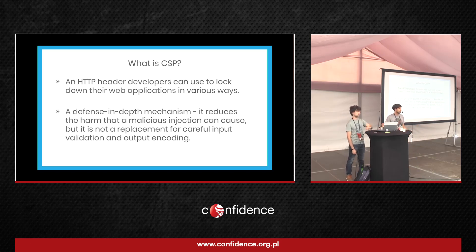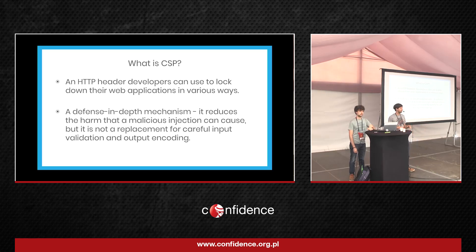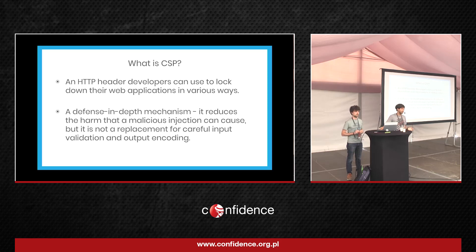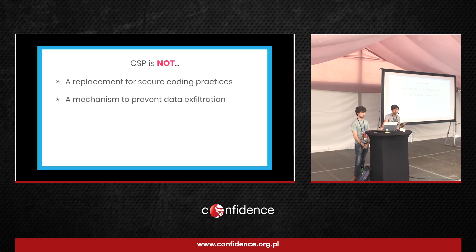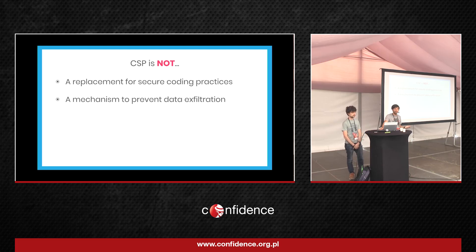Content security policy is, in theory, as simple as a response header for HTTP responses. It's interpreted by the browser and can be used by developers to lock down the application in certain ways. Most importantly, this is a defense-in-depth mechanism — it's not a replacement for secure coding practices, nor for careful input validation or output encoding of user or attacker-provided content. It's a safety net. If you have a critical application like a banking app or Gmail, there's a lot of secure coding practices, but every now and then there will be a bug — a cross-site scripting issue — and it's very good to have something that protects the user in the case that you've missed something.